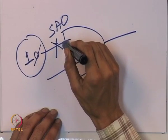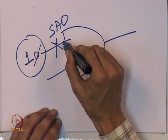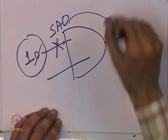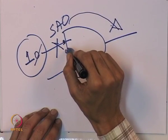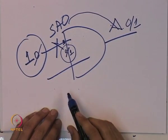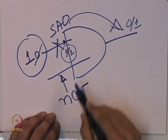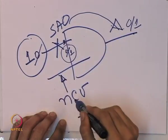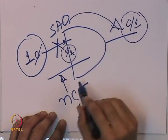After sensitization, you must propagate the fault effect to an observable point — a primary output. To propagate through a gate, the other input must be at the non-controlling value. For an AND gate, the non-controlling value is 1. If the other input is 1, the output is determined by the faulty input, allowing the fault effect to propagate. This is fault propagation.